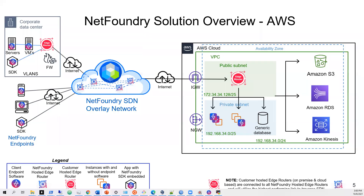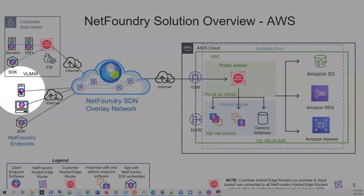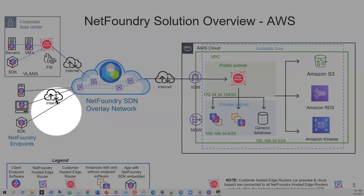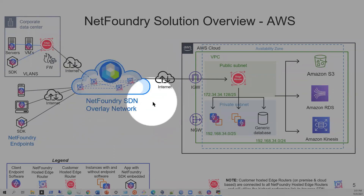That's kind of the big picture. If you think about where all these little Zs are, that shows you what it might look like in an enterprise and where you can have the software — how deep do you want to have zero trust networking implemented. And of course this all assumes it's all an internet-based overlay network.